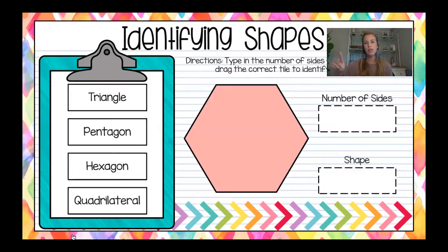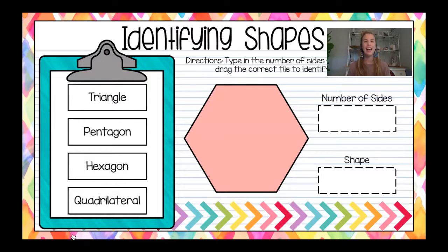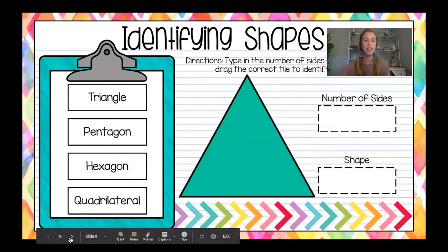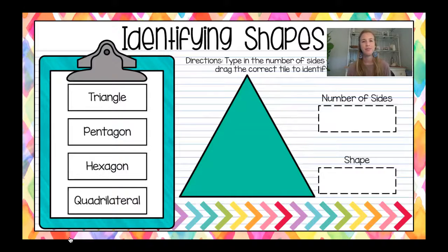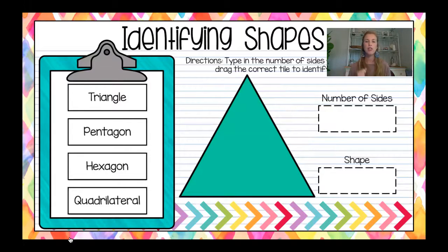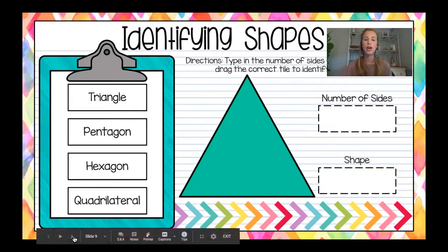Let's count together: one, two, three, four, five, six — so another one with six sides. What do we call a six-sided figure? A hexagon. Hex means six. Next shape: one, two, three — so three sides. A three-sided figure is called a triangle.